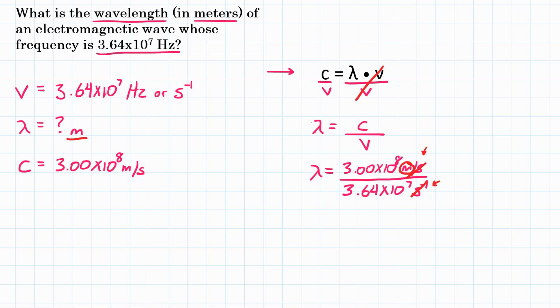So now we can do the math. You're going to punch in your calculator the numerator, which is 3.00 times 10 to the 8th, and we're going to divide by the denominator.